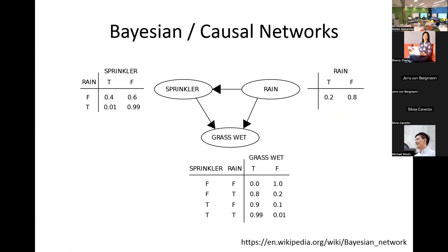I'm going to start by laying some groundwork in statistics and data science, since I'm not sure how many people are familiar with integrated information. Starting with something hopefully everyone has heard of: Bayesian networks are causal networks, which are essentially conditional probabilities. I pulled this example off Wikipedia — you've got sprinkler, rain, and grass. You want to know whether the sprinkler is on or off conditional on whether it's raining, and whether the grass is wet conditional on whether the sprinkler is on or off. You collect data and learn the conditional probabilities, and from those you can draw this kind of network structure.